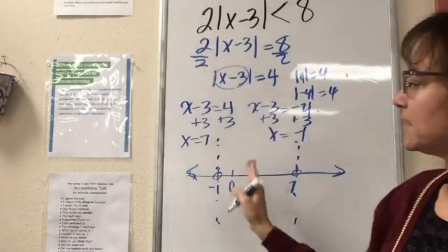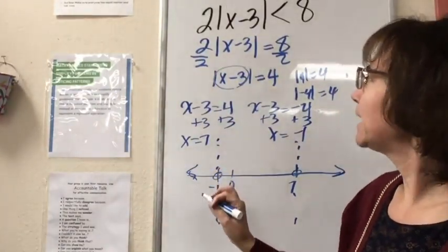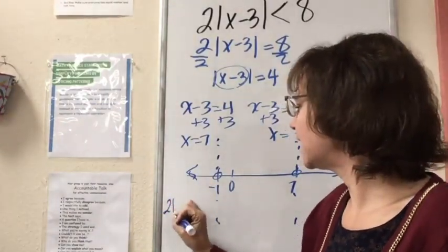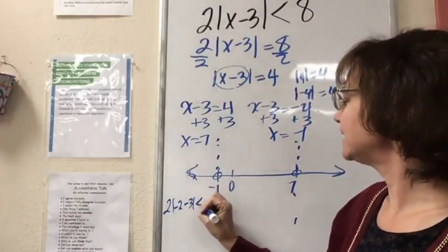Let's do this first one. Let's test to the left of negative 1, so let's test negative 2. I have 2|(-2)-3|, and I want to see if that is less than 8.